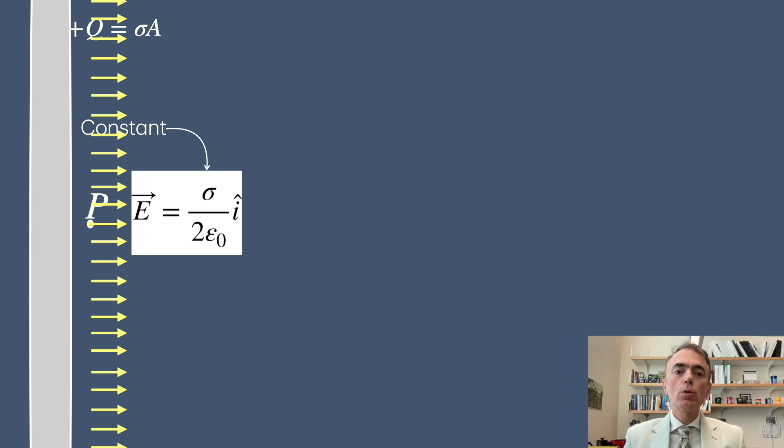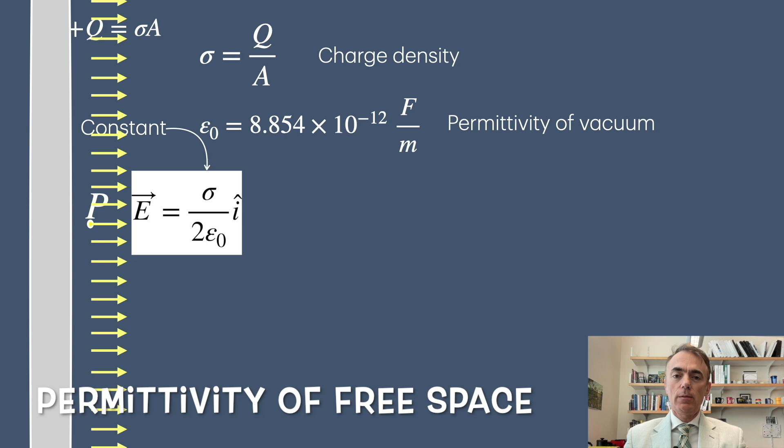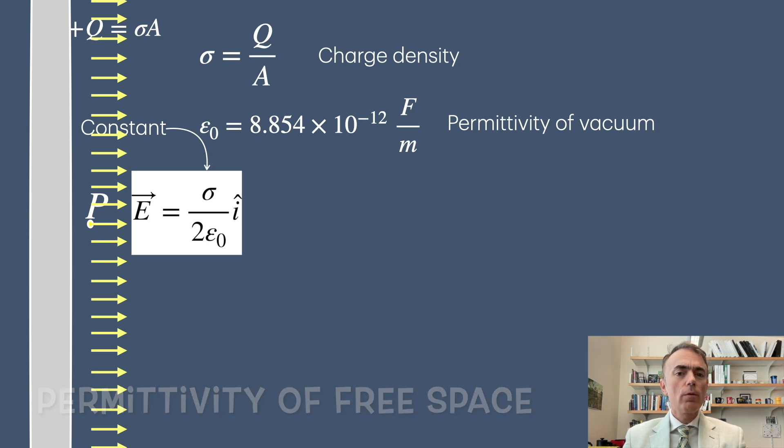When you get very close to the surface of the disk the distance from any given point on the disk becomes so small that the curvature of the disk is negligible. In this situation the electric field is almost uniform and can be approximated as one half of sigma epsilon naught, where sigma is the surface charge density and epsilon naught is the permittivity of free space. This formula is for the field produced by a single disk.